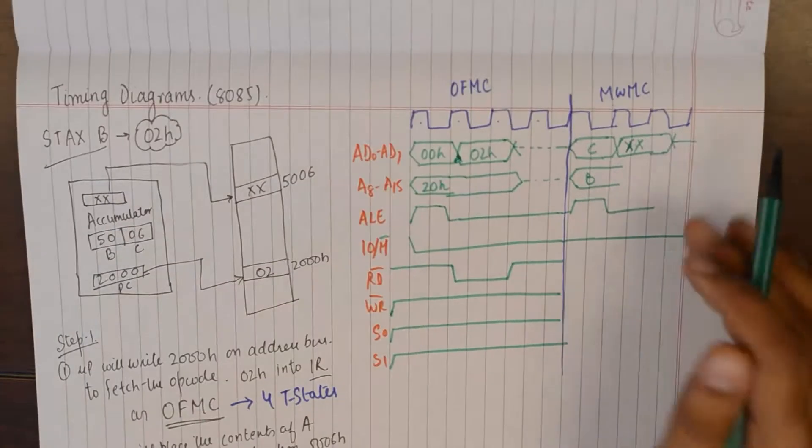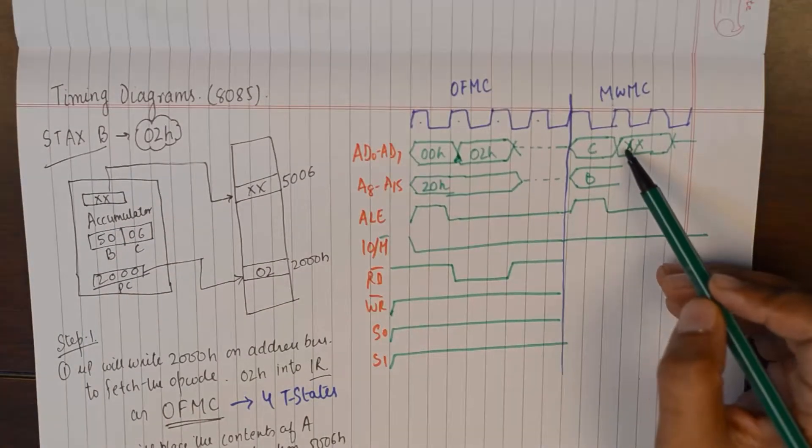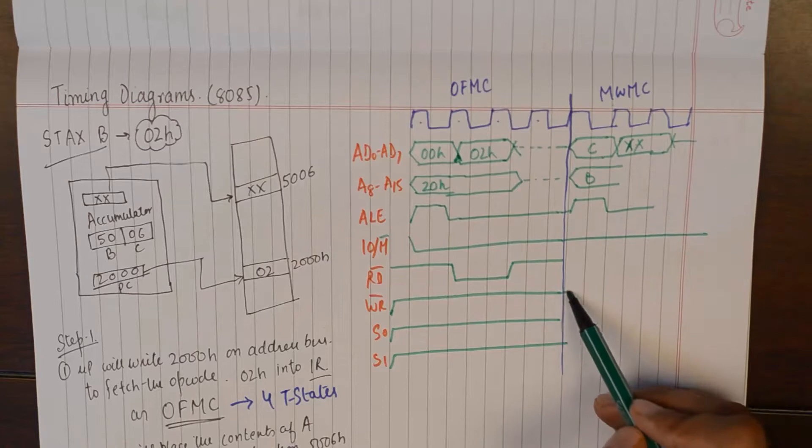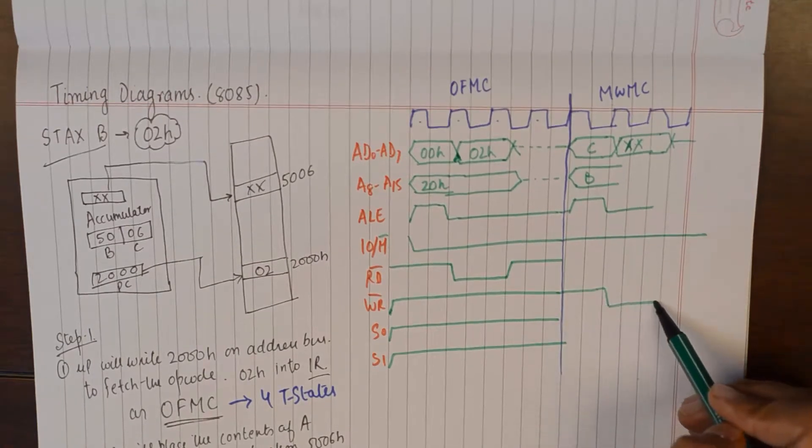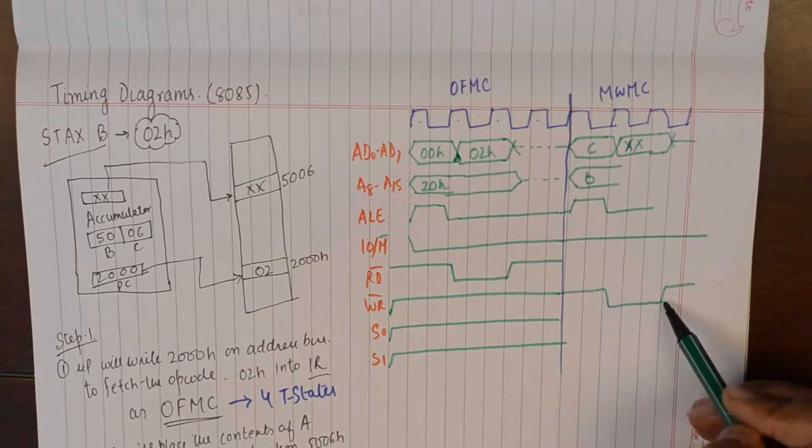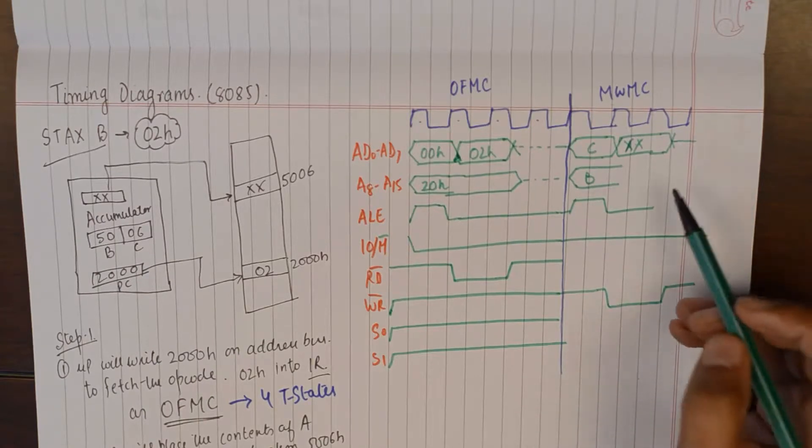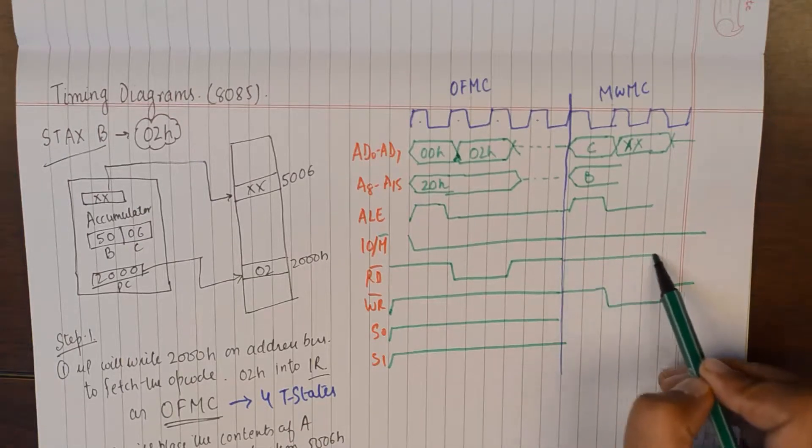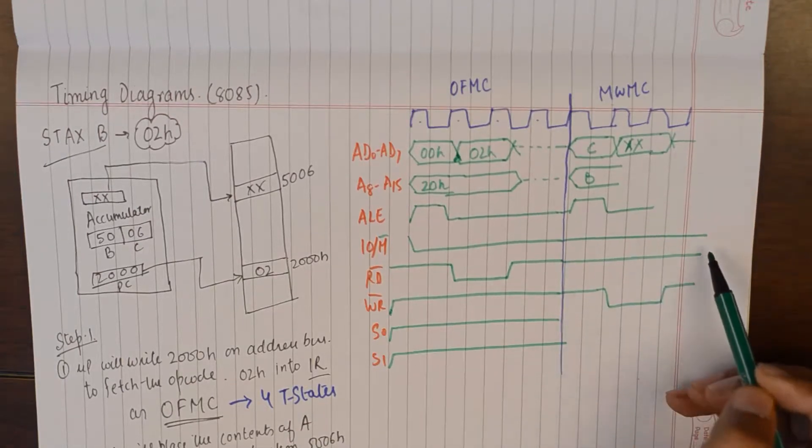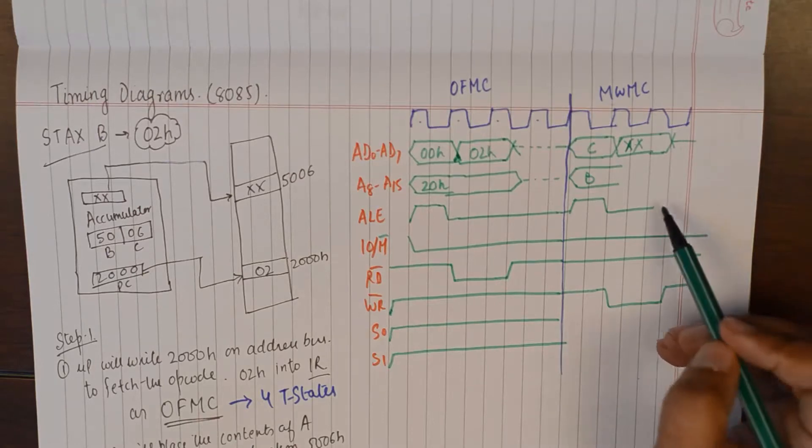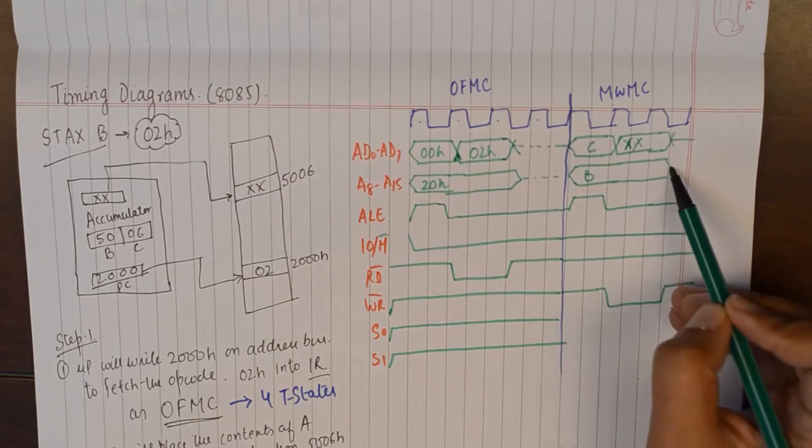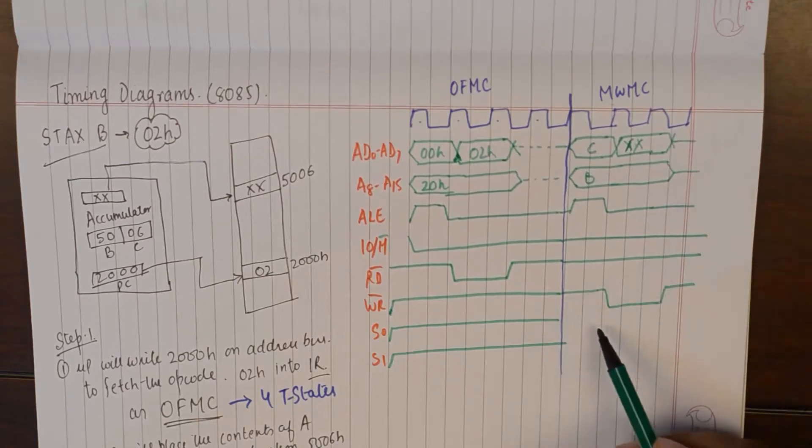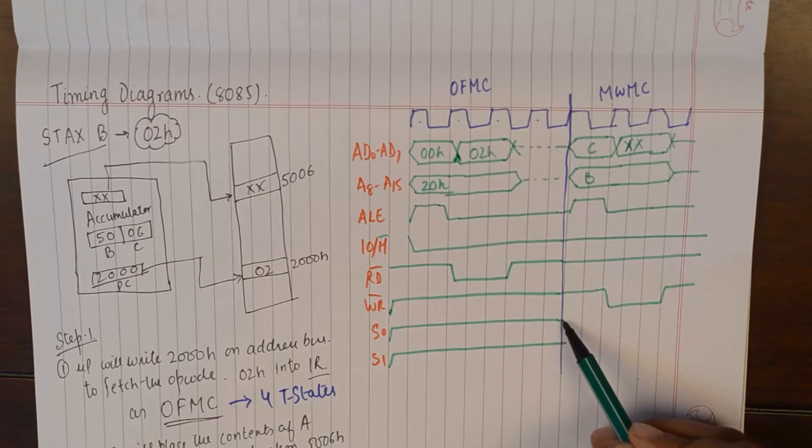Now in order to write the contents of accumulator in the external memory location we would want our write pin to go active and it will go low to become active. And read would remain inactive because it has got nothing to do with bringing anything from the memory. And the rest of the things are pretty simple. We will make S0 as 0, S1 as 1.